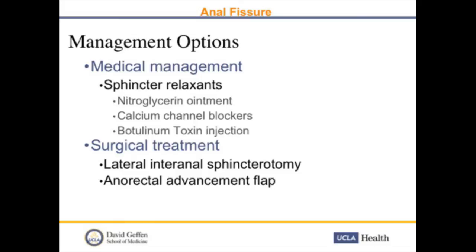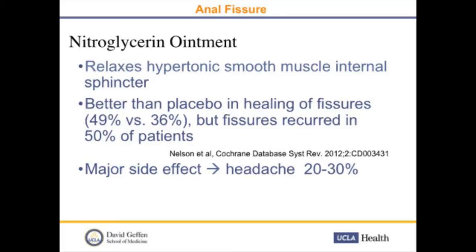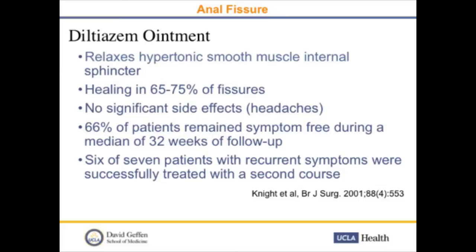Nitroglycerin relaxes the smooth muscle and is better than placebo in healing fissures, but the major side effect is headache, occurring in 20 to 30 percent of patients — I typically don't prescribe this because I don't think patients are compliant. Diltiazem, I usually start with; it causes healing in about 65 to 75 percent of fissures with no significant side effects. Six out of ten patients will heal, usually after eight weeks of treatment. When patients are still having symptoms after eight weeks, I give them another eight weeks of treatment, and the majority of those patients will heal — in one study, six of seven patients were successfully treated with a second course.